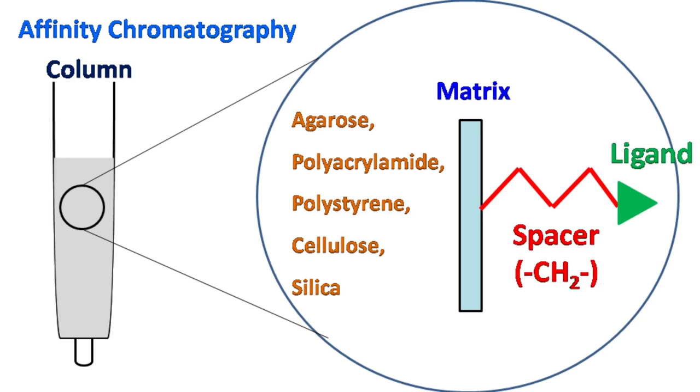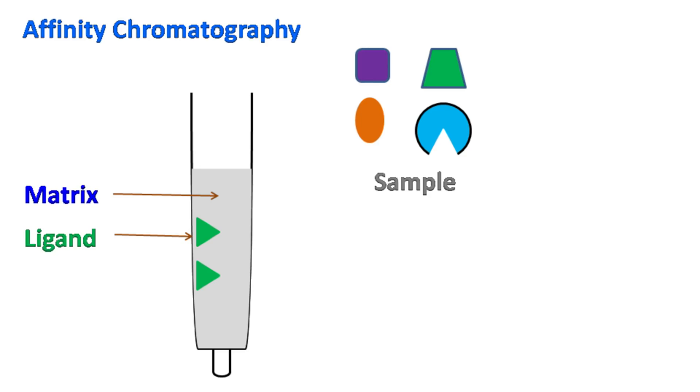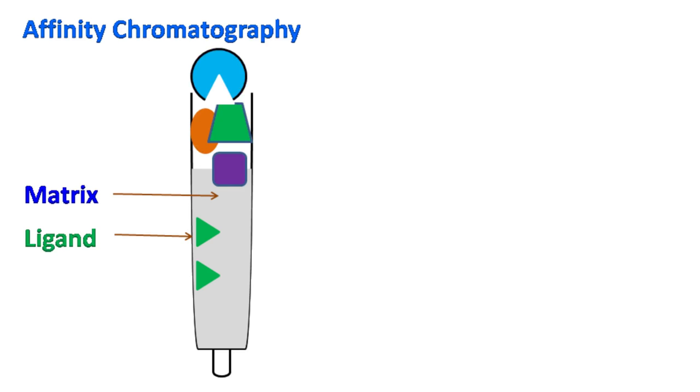Let's see the working of affinity chromatography. When the mixture of different molecules is passed through the affinity column, only the molecule that has specific affinity for the ligand binds the ligand. The other molecules are washed away.